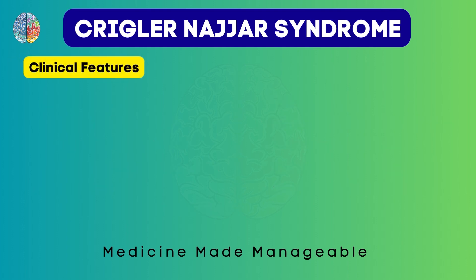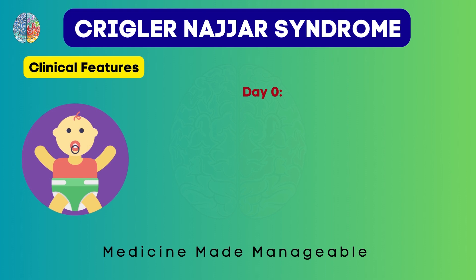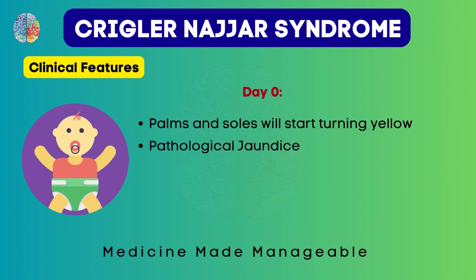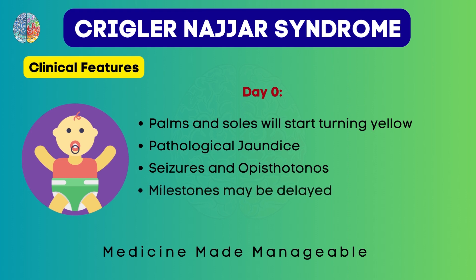The clinical features are especially pronounced in type 1, where you can start to see them from day 0 itself. The palms and soles of the baby will start to turn yellow, which is called pathological jaundice. Seizures and opisthotonus may also be seen, and developmental milestones may be delayed.